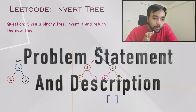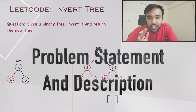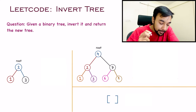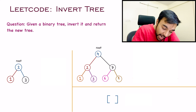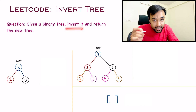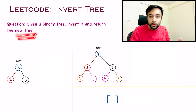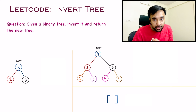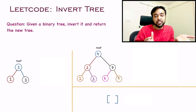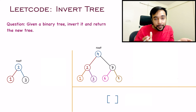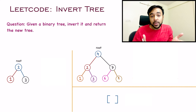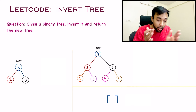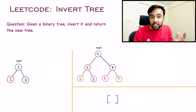Let us quickly make sure that we are understanding the problem statement correctly. In this problem, you are given a binary tree and you have to invert it, then return the new tree. This problem is pretty straightforward and it is asked in a lot of different ways — it could be asked as: mirror a binary tree, or flip a binary tree.